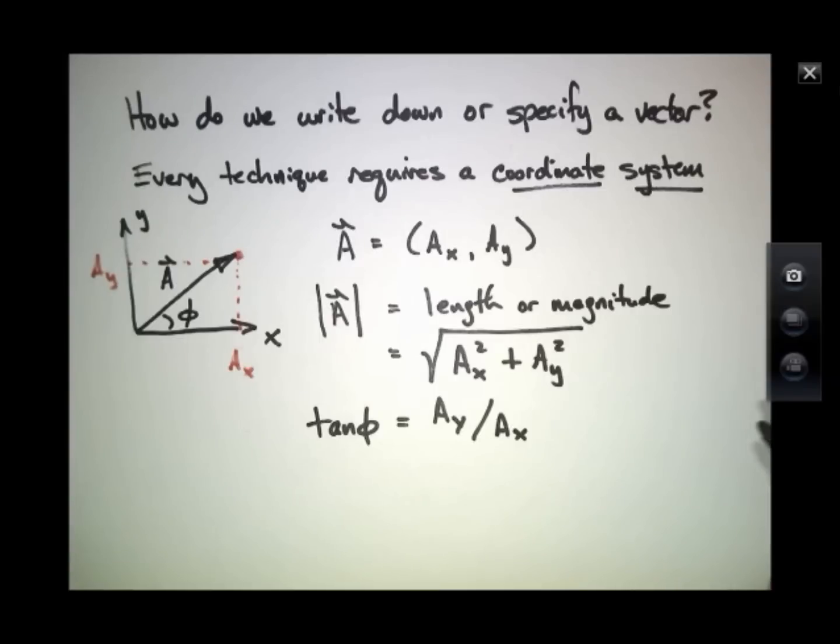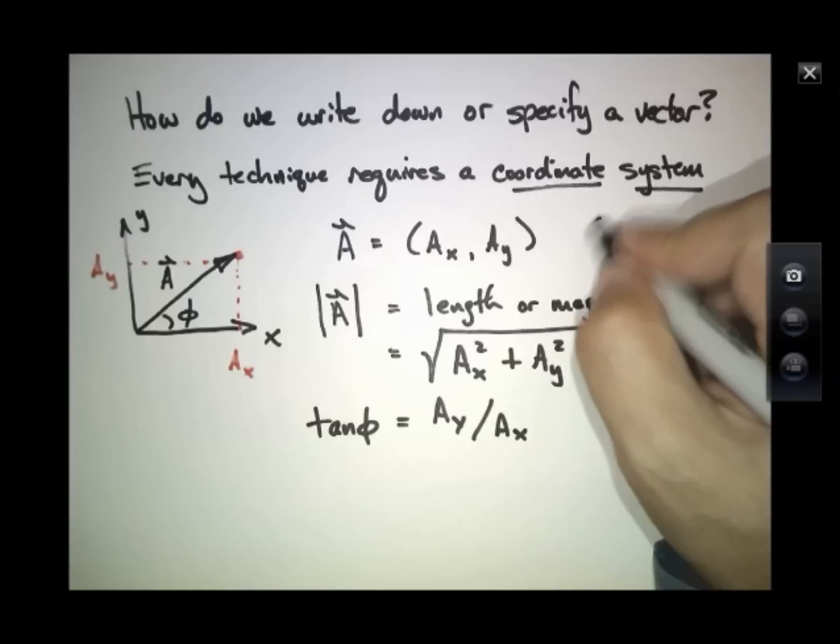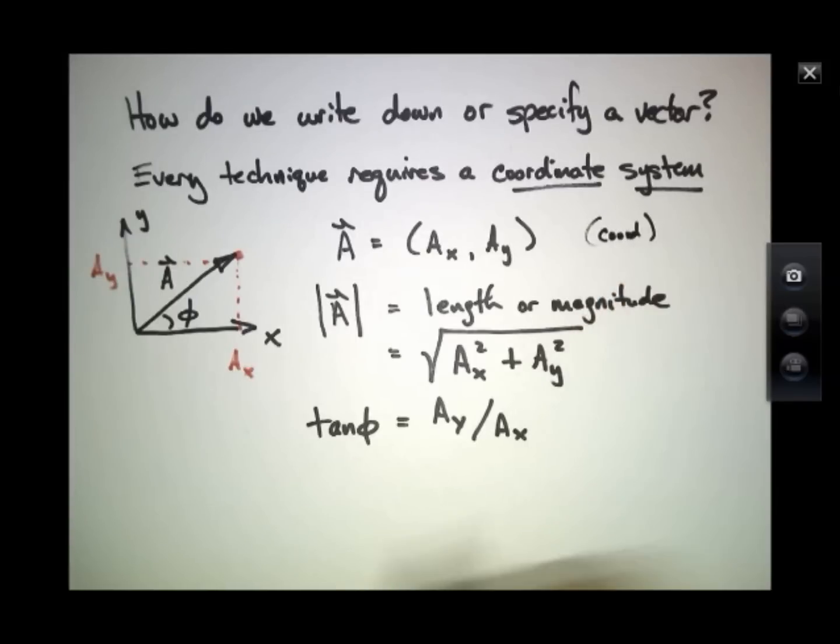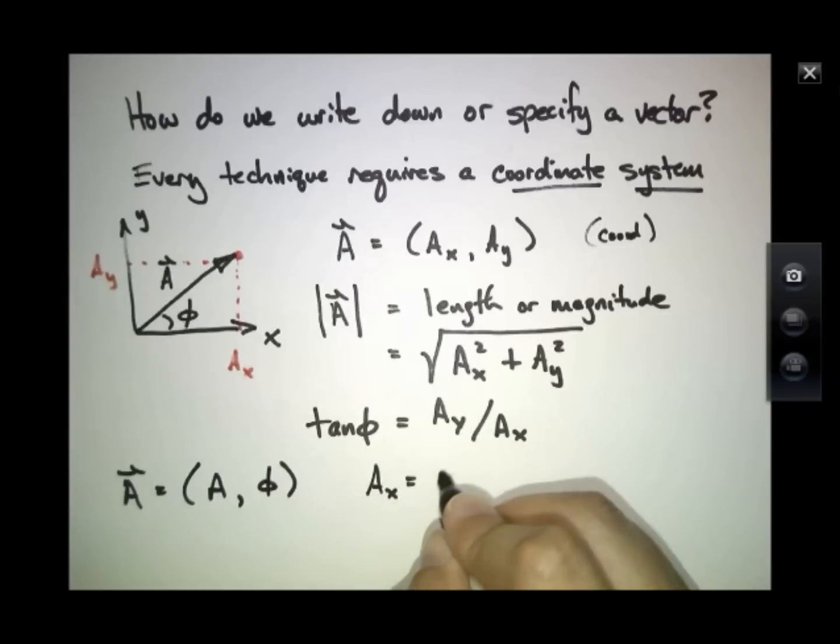So that's one way. You could just tell me the coordinates. Another way to tell me about what a vector is, is to give me another pair of numbers, its length, and that angle. Because then I can reconstruct that A x will equal A cosine of this angle phi and A y equals A times sine of this angle phi.